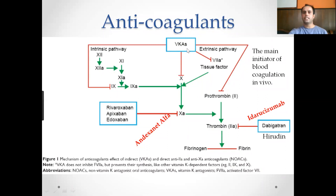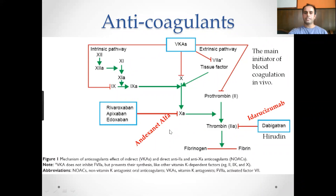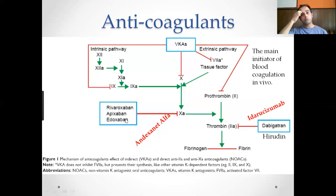Here is the intrinsic and extrinsic pathway diagram. Vitamin K antagonists like warfarin inhibit factors 2, 9, 7, and 10. The extrinsic pathway is the main initiator of blood coagulation. Activation of factor 10 converts prothrombin to thrombin, which converts fibrinogen to fibrin. Direct factor Xa inhibitors include rivaroxaban, apixaban, edoxaban, and a newer drug andexanet alfa, which has been FDA approved and is known to reverse the effects of apixaban and edoxaban.